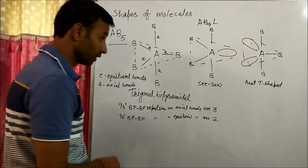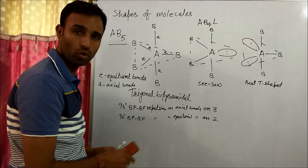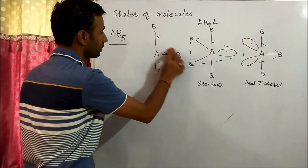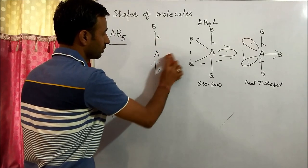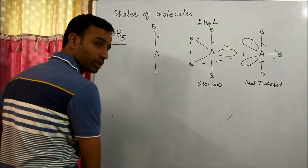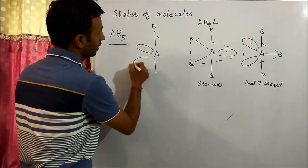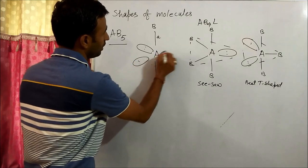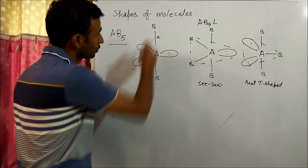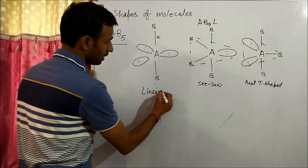Now if we have three lone pairs, all three equatorial positions are occupied by lone pairs. So the shape is linear.